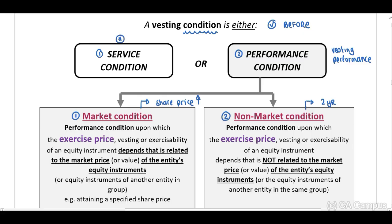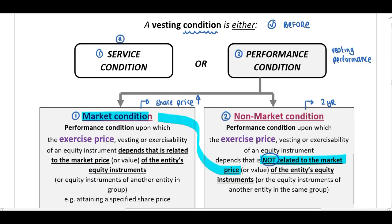Let's read through the definitions. A market condition is a performance condition upon which the exercise price, vesting, or exercisability of an equity instrument depends, that is related to the market price. A non-market condition is a performance condition upon which the exercise price, vesting, or exercisability of an equity instrument depends, that is not related to the market price. Therefore, a non-market condition is simply a condition not related to market prices.